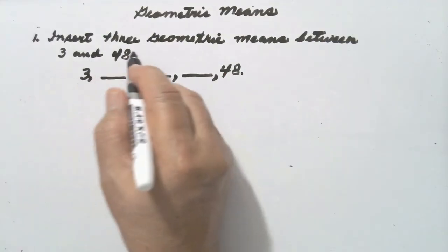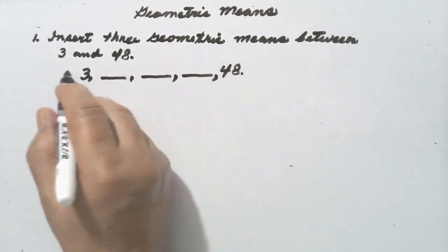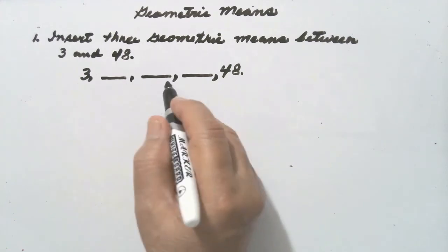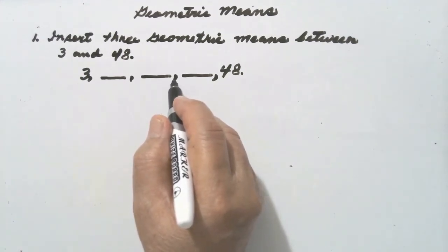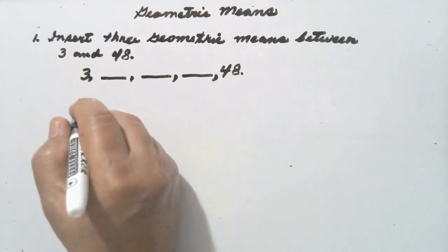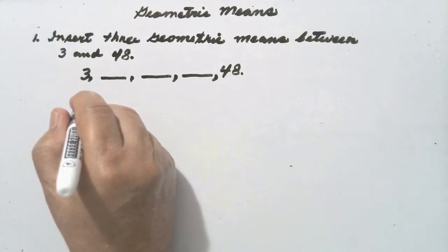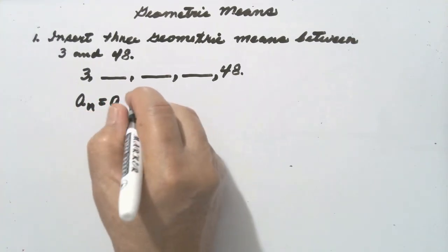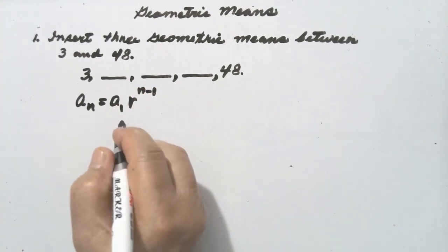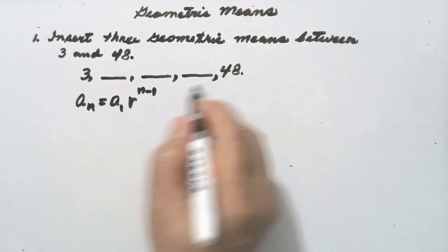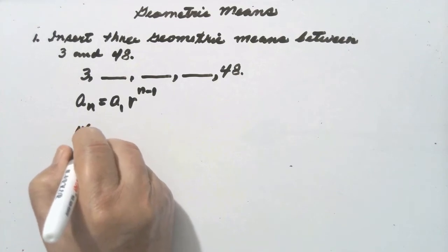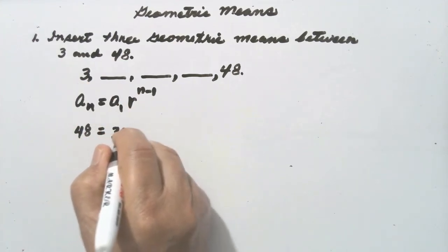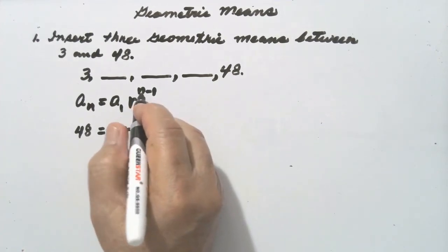Number one: insert three geometric means between 3 and 48. The two given terms are 3 and 48, and the terms between them are the geometric means, but they are missing and we are asked to insert them. The first thing to do is to write the formula: a sub n is equal to a sub 1 times r raised to n minus 1. A sub n is the last term, so replace it by 48. A sub 1 is the first term, so replace it by 3.